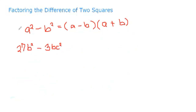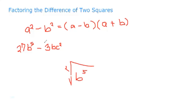We have b in both terms, so it seems complicated. Also, b raised to 5 is not a perfect square since the square root would give 5 over 2, which is not a whole number. So we cannot factor it directly as a difference of two squares right away.